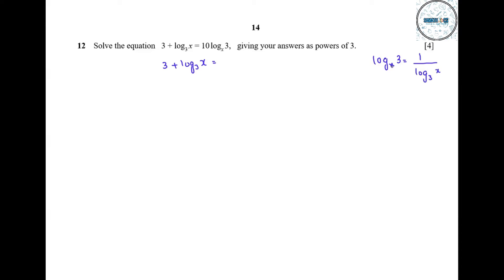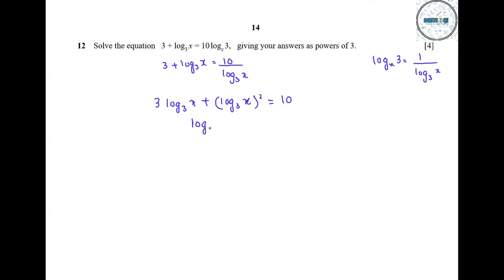When we take this to the denominator, the base becomes the number and the number becomes the base, giving us 10 upon log base 3 of x. Cross multiplying: 3 log₃x plus (log₃x)² equals 10. We can solve by substitution, letting a equal log₃x, so this becomes 3a plus a² equals 10, giving the quadratic a² plus 3a minus 10 equals 0.